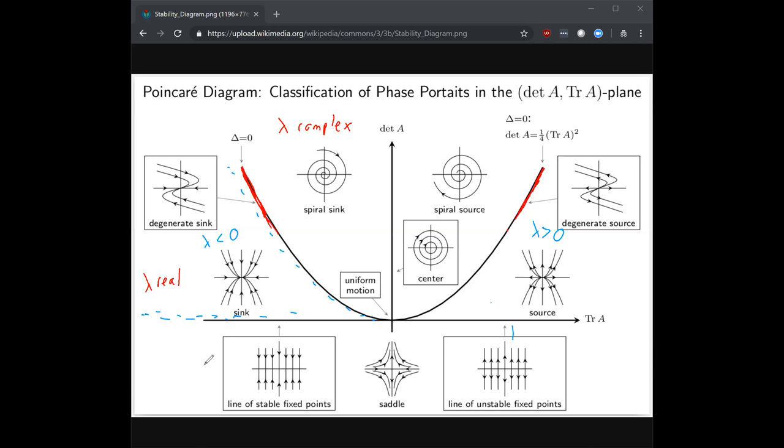Now, you fall under this regime down here if your eigenvalues are of opposite signs. If one is positive and the other is negative, then you are below this line over here. And you have the behavior of a saddle point.